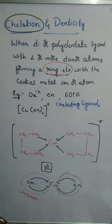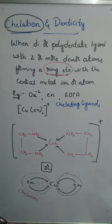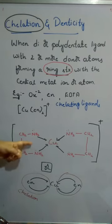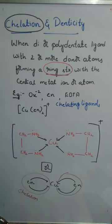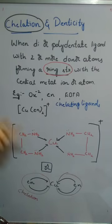We have seen the example of [Cu(en)₂]²⁺ — this is a bidentate ligand, so the process is called bidentate chelation. If a tridentate ligand is used, it becomes terdentate chelation — note it is 'terdentate,' not 'tridentate,' for the chelation type.